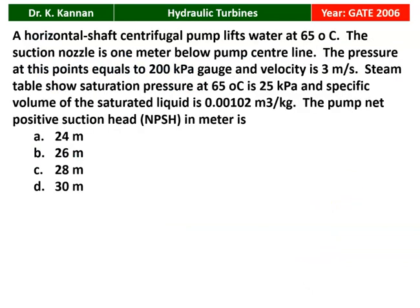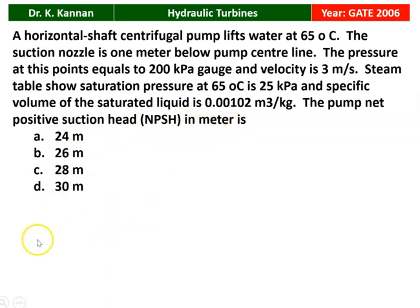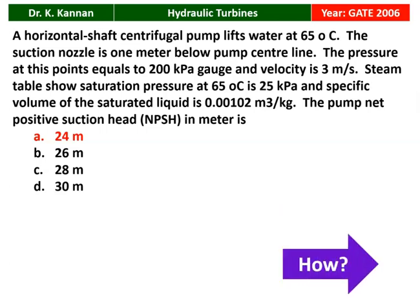This is another question from the 2006 question paper. A horizontal shaft centrifugal pump lifts water at 65°C. The suction nozzle is 1 meter below the pump centerline. The pressure at this point equals 200 kPa gauge and the velocity is 3 meters per second. Steam tables show saturation pressure at 65°C is 25 kPa, and specific volume of saturated liquid is 0.00102 m³/kg. The pump net positive suction head (NPSH) in meters is? The correct answer is 24 meters. We will see how in the next slide.